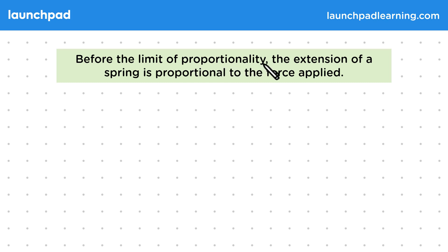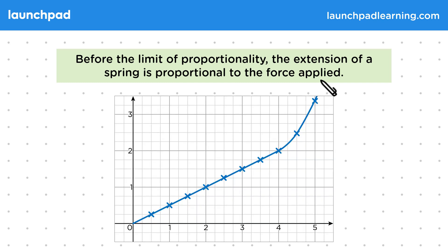Before the limit of proportionality, the extension of a spring is proportional to the force applied. So we can create a force extension graph by plotting extension on the y-axis and force on the x-axis.